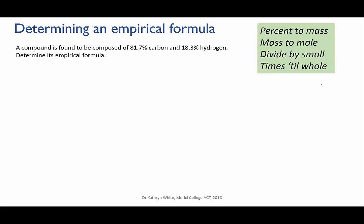So here's our problem. Say we've done a mass percent analysis of a sample and we find that it's composed of 81.7 percent carbon and 18.3 percent hydrogen. The sequence of calculations that you go through is nicely summarised by this little rhyme which I picked up from Bergman and Sams in their chemistry videos. Percent to mass, mass to mole, divide by small, times till whole.